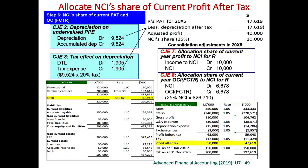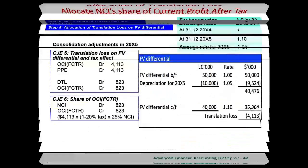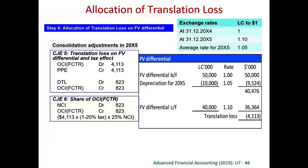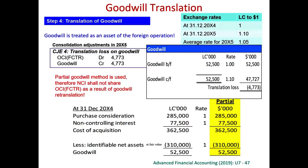NCI shares both profit and translation reserve. For the translation reserve on the book value of the net assets, the total is a debit of $26,710. To share to NCI, we credit translation reserve for 25% of $26,710 and debit NCI. We also share the translation reserve for fair value adjustments. We do not need to share the translation reserve on goodwill because we are using the partial goodwill method, so goodwill has nothing to do with NCI.